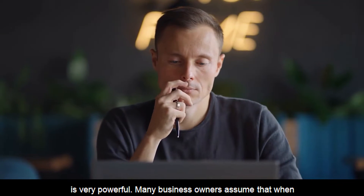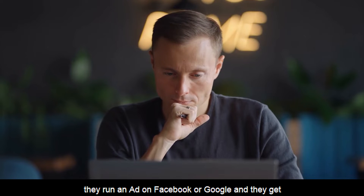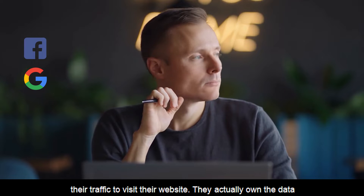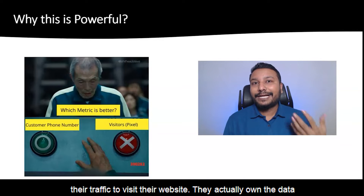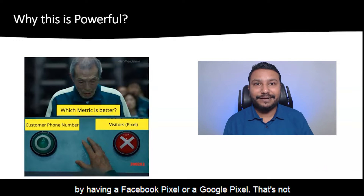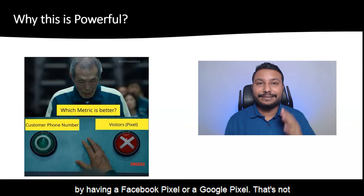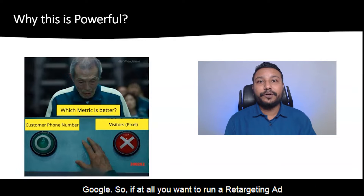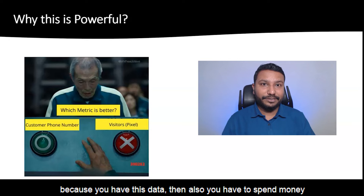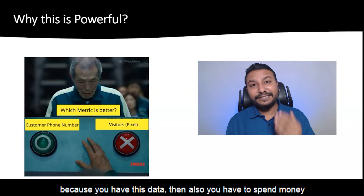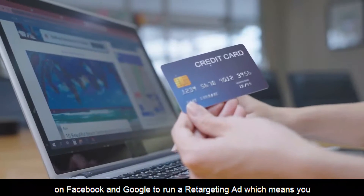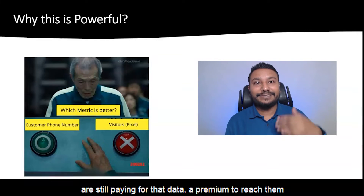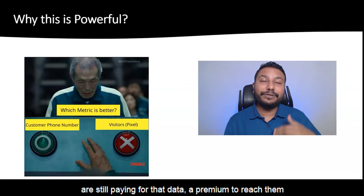Many business owners assume that when they run an ad on Facebook or Google and get traffic to visit their website, they actually own the data by having a Facebook pixel or a Google pixel. That's not completely true, because the data is still owned by Facebook or Google. So if you want to run a retargeting ad because you have this data, you still have to spend money on Facebook and Google to run that retargeting ad — which means you are still paying a premium to reach them back.